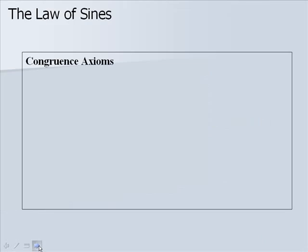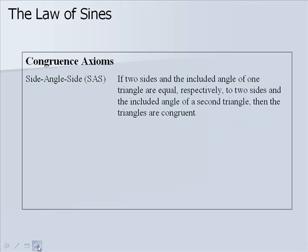We have the following congruence axioms. Side-angle-side states that if two sides and the included angle of one triangle are equal, respectively, to two sides and the included angle of a second triangle, then the triangles are congruent.